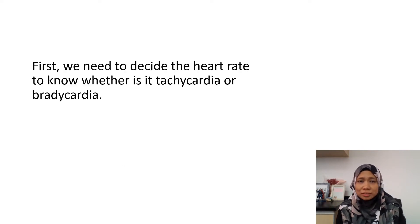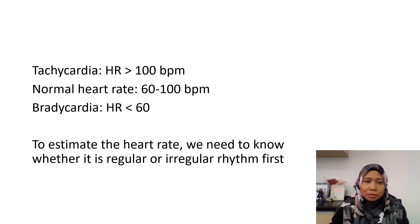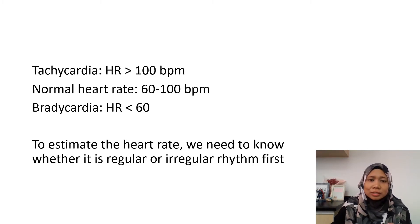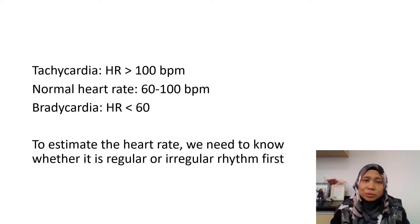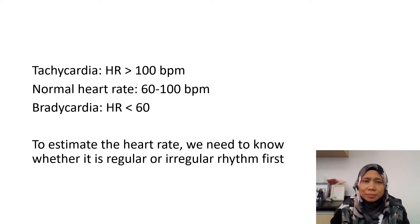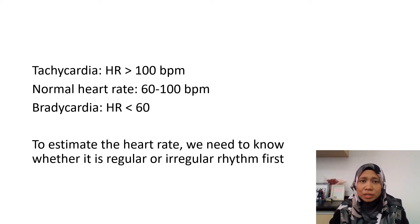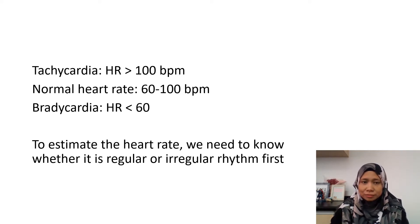To decide the rhythm, first we need to decide whether it is tachycardia or bradycardia. The normal heart rate is 60 to 100. Tachycardia is when the heart rate is more than 100, and bradycardia is when the heart rate is less than 60. To estimate this, we need to know whether the rhythm is regular or irregular first.